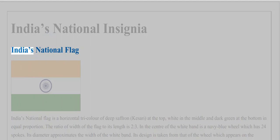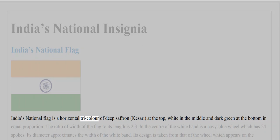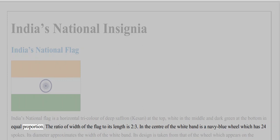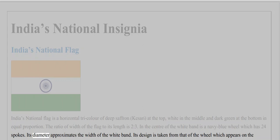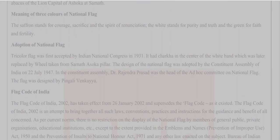India's national flag is a horizontal tricolor of deep saffron (kesari) at the top, white in the middle, and dark green at the bottom in equal proportion. The ratio of width to length is 2:3. In the center of the white band is a navy blue wheel with 24 spokes, whose diameter approximates the width of the white band. Its design is taken from the wheel on the abacus of the Lion Capital of Ashoka at Sarnath.